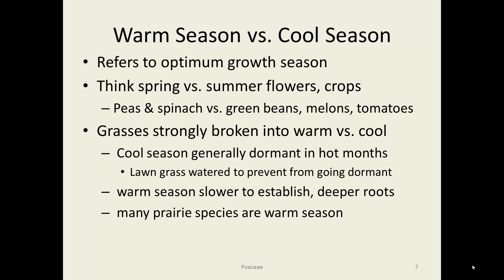Warm season versus cool season — you'll see that come up a lot when you study grasses. It's similar to summer and cool-season flowers. Spring flowers that come up and then die out by the time it gets hot would be cool season. Things that are almost dormant until it does get hot are called warm season. In grasses, that's a very strong distinction. Cool season grasses, like our lawn grass, are very active in spring and fall and generally dormant in the hot months, although many people water their grass to keep it from going dormant. Warm season species are slower to establish and have much deeper roots, which allows them to get through that hot, dry August. Many of our prairie species are indeed warm season grasses.